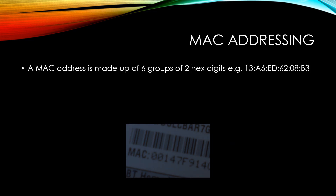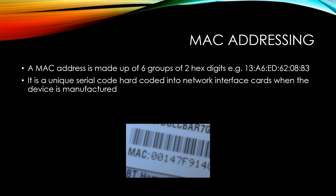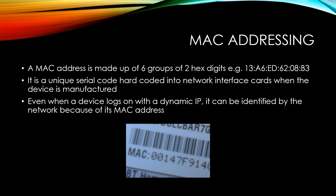A MAC address is made up of 6 groups of 2 hex digits — for example, 13A6ED6208B3 could be a MAC address. It is a unique serial code hard-coded into network interface cards when the device is manufactured. Even when a device logs on with a dynamic IP address, it can be uniquely identified by the network because of its MAC address.